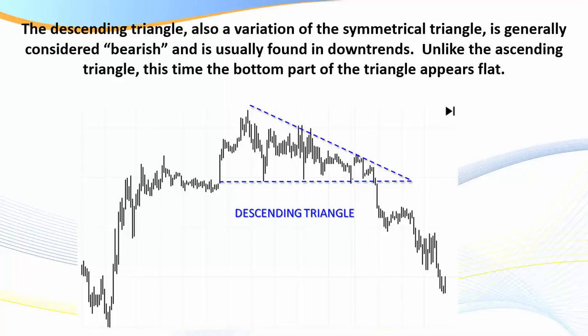The descending triangle is also a variation of a symmetrical triangle, generally considered bearish and usually found in downtrends. Unlike the ascending triangle, the bottom part of the descending triangle appears flat. These flat areas quite often correspond to a pivot point or floor pivot — you've come down, bounced off the pivot, tested it three or four times before finally getting a break. Be aware it may also test the floor pivot and then break in the opposite direction if sellers don't follow through.